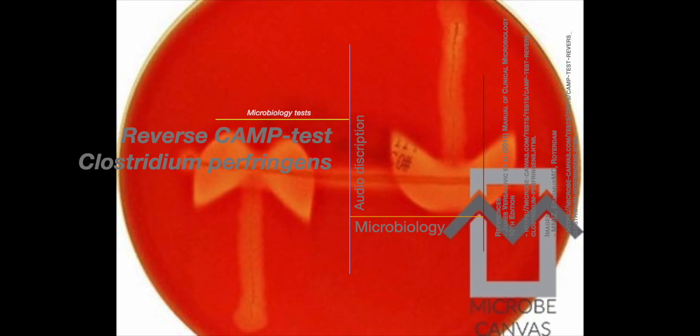The CAMP factor reaction was initially described in 1944 by Christie, Atkins, and Munch-Peterson. Their research focused on the synergistic lysis of erythrocytes by the beta-hemolysin of Staphylococcus aureus and the extracellular CAMP factor of Streptococcus agalactiae. The reverse CAMP test, as described above, adapts this principle to specifically identify C. perfringens.